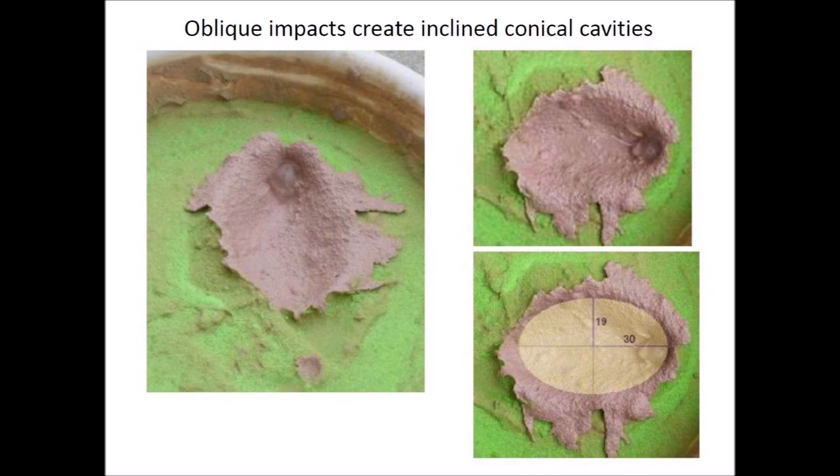Experiments confirm that oblique impacts on viscous targets create inclined conical cavities that are elliptical when viewed from above. The raised rims around the cavities are characteristic of impacts because impact cratering displaces material laterally by horizontal compressive forces and ejects debris ballistically to create stratigraphically uplifted rims.